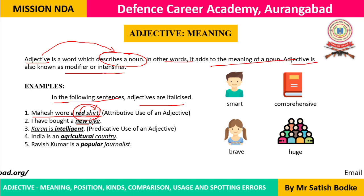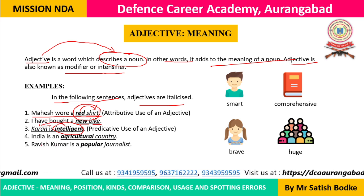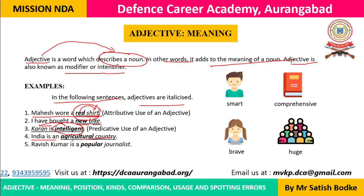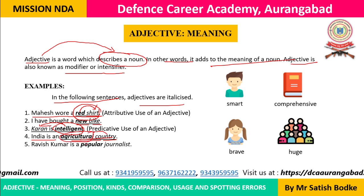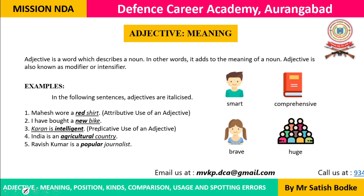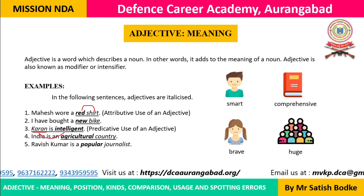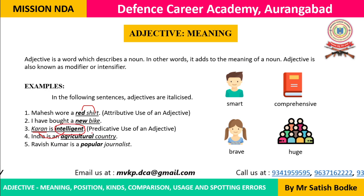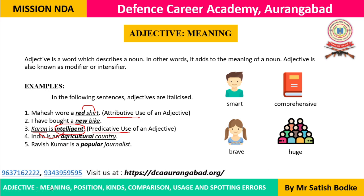More examples: 'I have bought a new bike' — new is the adjective, bike is the noun. 'Karan is intelligent' — intelligent is the adjective describing the noun Karan. 'India is an agricultural country' — agricultural modifies the noun country. 'Ravish Kumar is a popular journalist' — journalist is the noun and popular is the adjective. An adjective modifies the meaning of a noun, used immediately before it (attributive) or in the predicate part (predicative adjective).